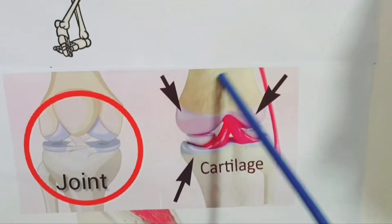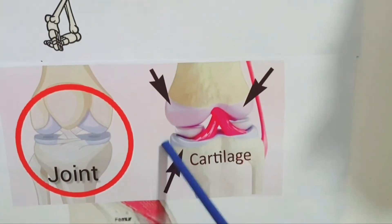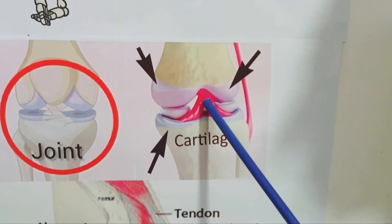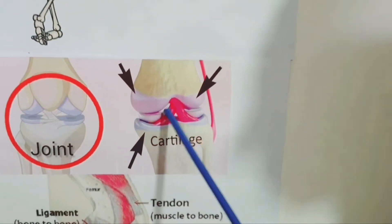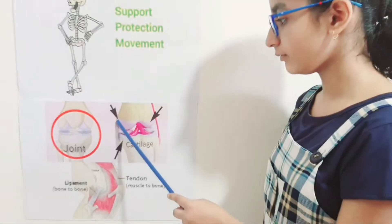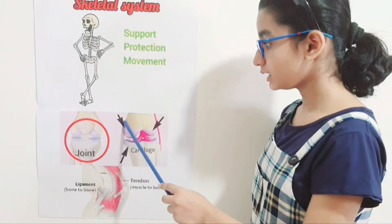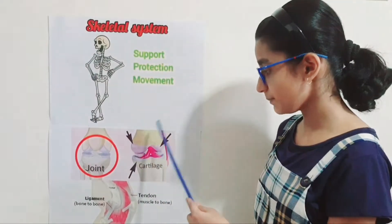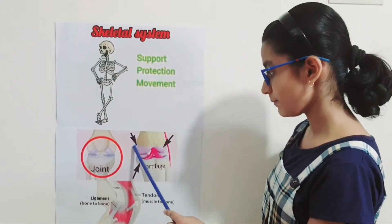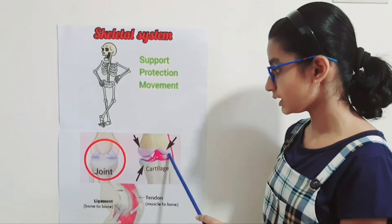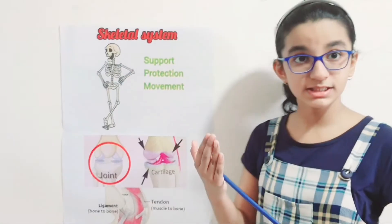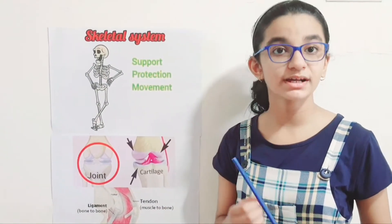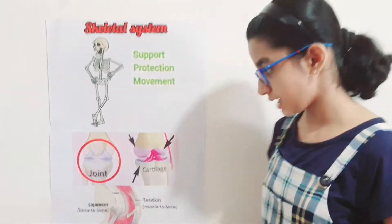Cartilage stops the bones from rubbing against each other. It is the soft gel-like padding between the bones and the tips of the bones that causes movement without friction rubbing against each other.